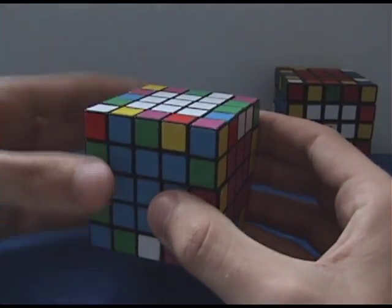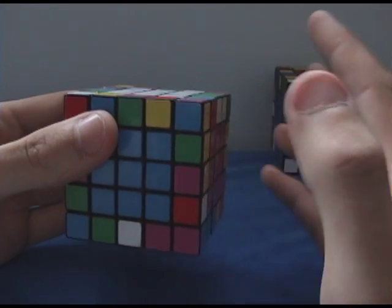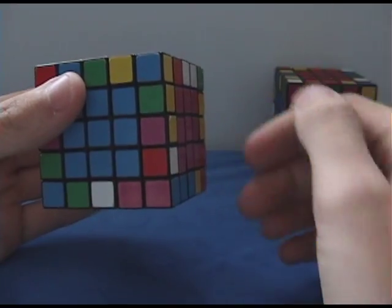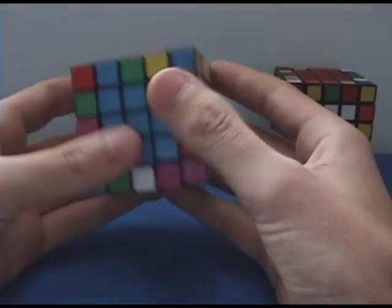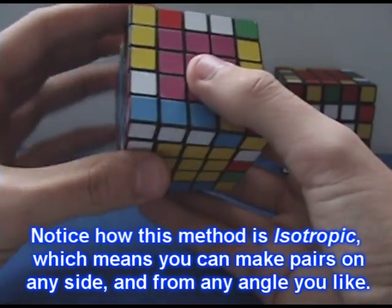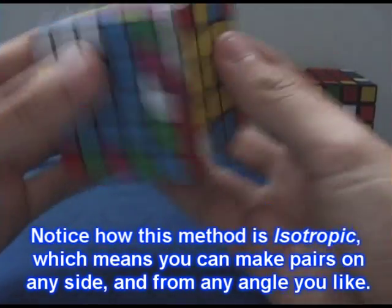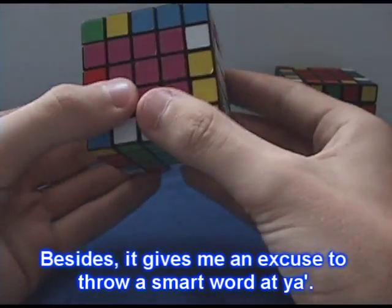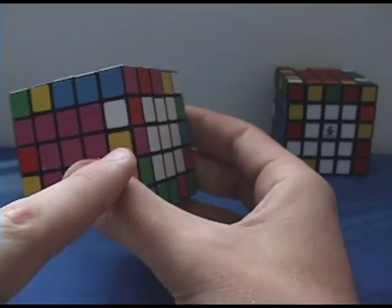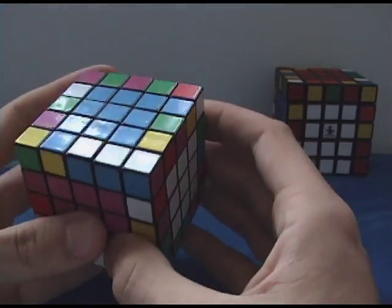Now, you can actually take that one step further and get two edges at once, and that's why the method is called double pairing in the first place. So let's see, like for example, you see this yellow and pink and this yellow and pink, and also keep in mind what the piece we move out of the way is.